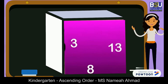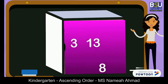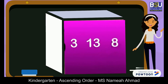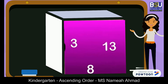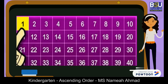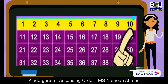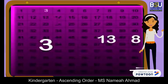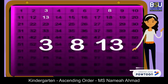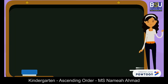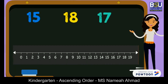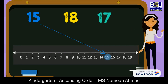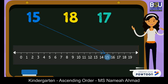Sometimes we have to sequence numbers which are in random placement — that is, they are not consecutive and not following each other. For example, if I have three numbers: 3, 13, and 8, I will use the number grid to find out from least to greatest and find the correct sequence: 3, 8, 13.